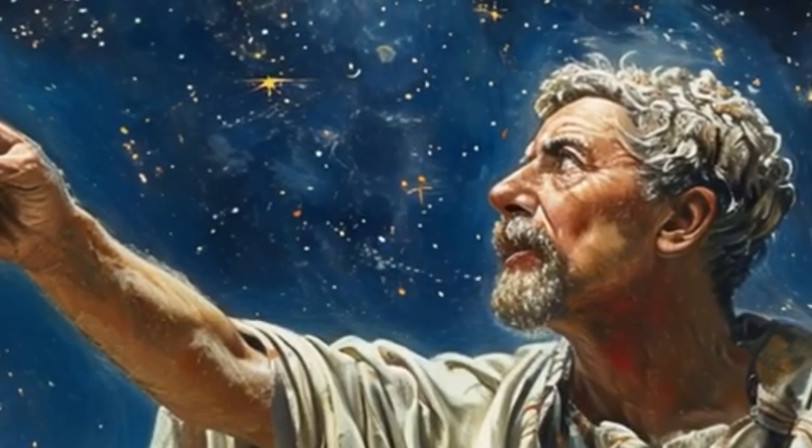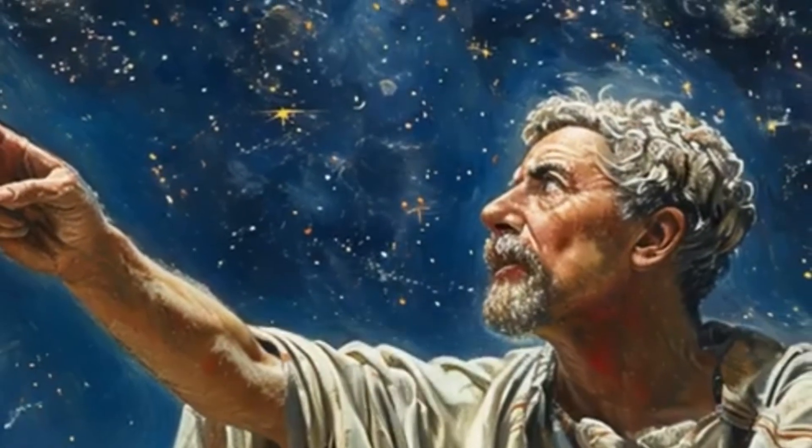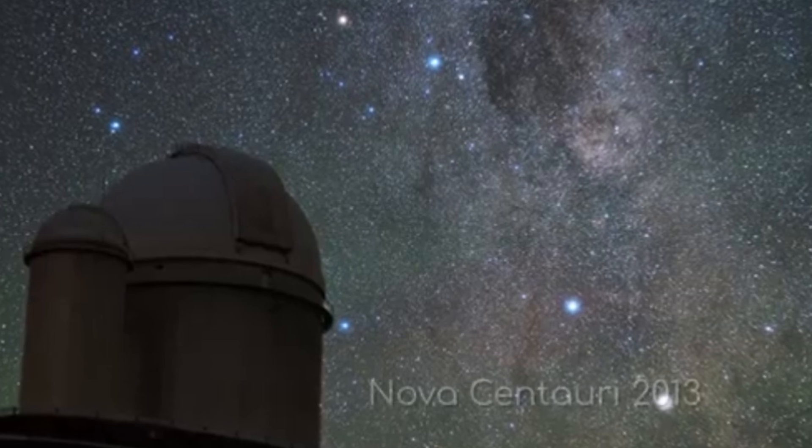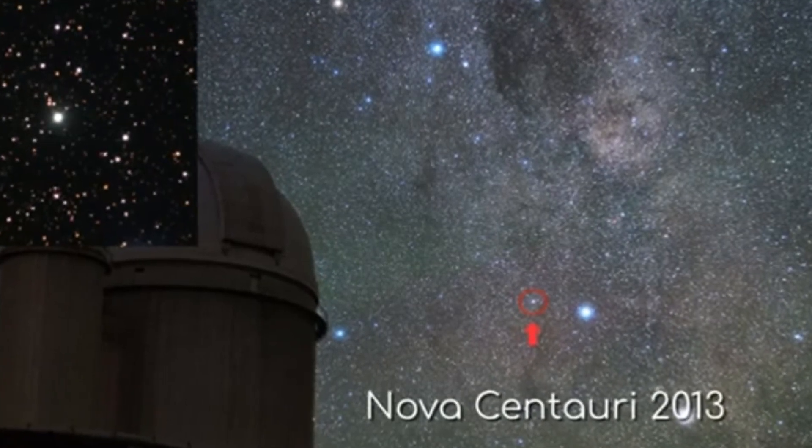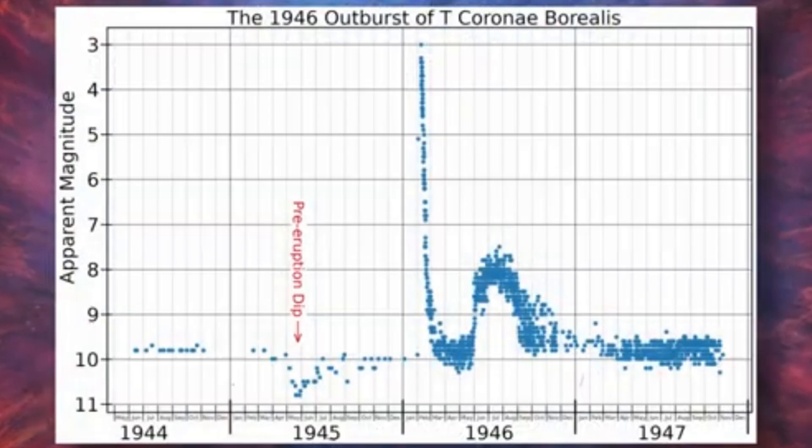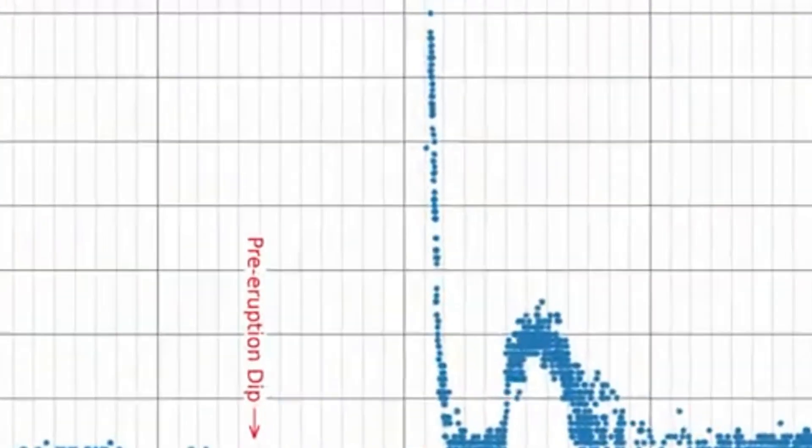Ancient astronomers recorded the first supernova observation in 185 A.D. in China, calling it a guest star that remained visible for about eight months. Centuries later, Johannes Kepler documented another supernova in 1604, so bright it was visible during the day.